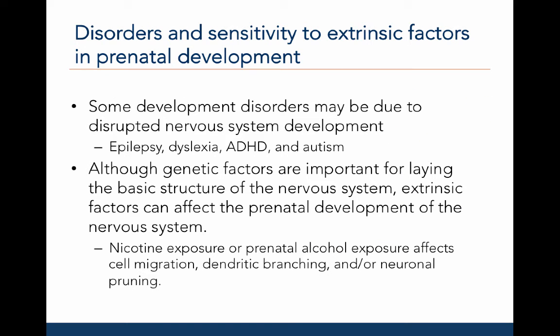Some developmental disorders may be due to disruptive nervous system development. Disorders like epilepsy, dyslexia, ADHD, and autism may be due in part to differences in cell migration, dendritic branching, neuronal pruning, or other neuronal functions. Although genetic factors are important for laying down the basic structure of the nervous system, extrinsic factors can also affect prenatal development. Nicotine exposure or prenatal exposure to alcohol affects cell migration, dendritic branching, and neuronal pruning.